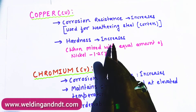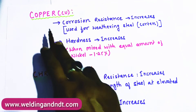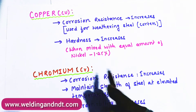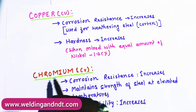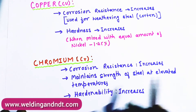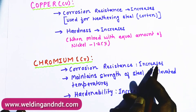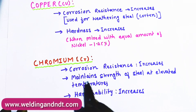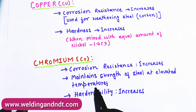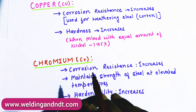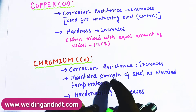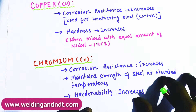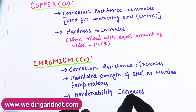Hardness of steel increases when copper and nickel are mixed in equal proportion — 1.25 percent each. With chromium, corrosion resistance increases and it maintains the strength of steel at elevated temperatures. Hardenability also increases with chromium.